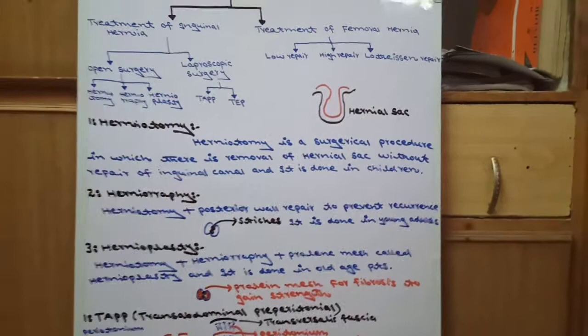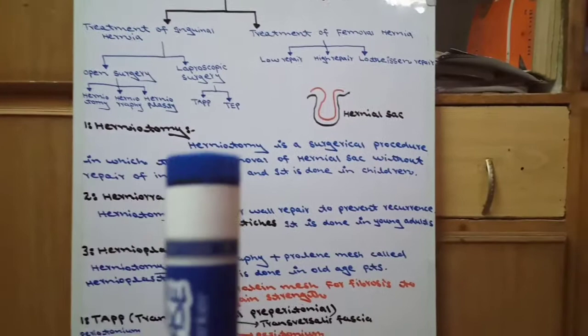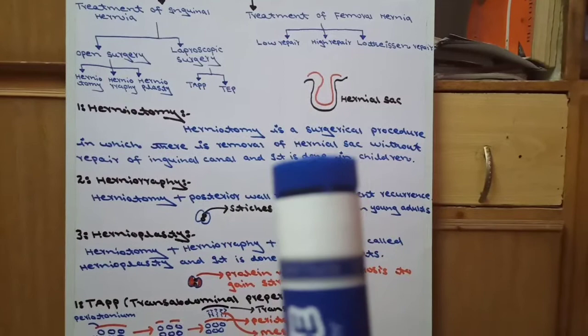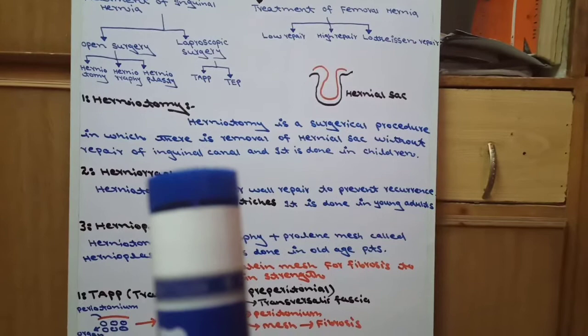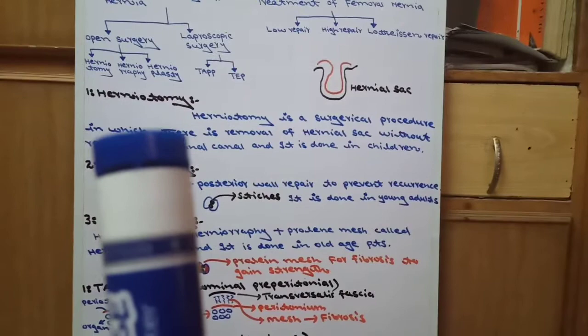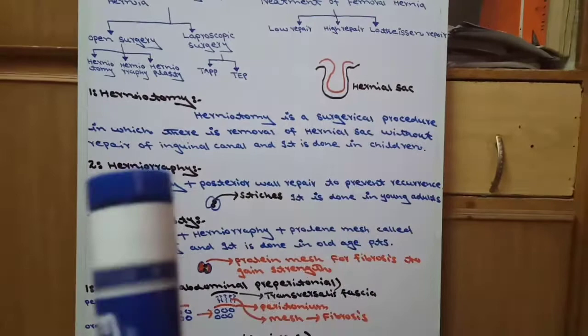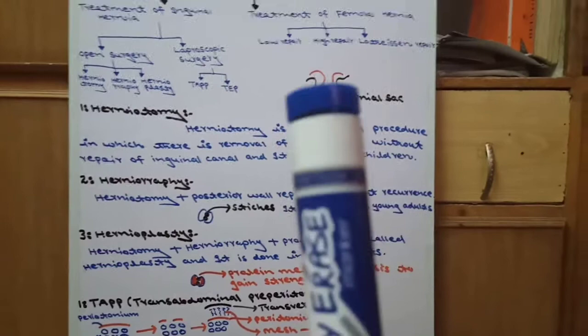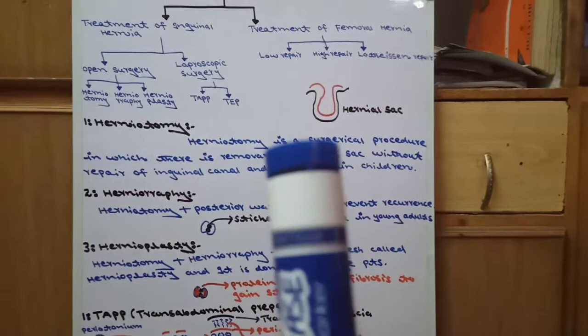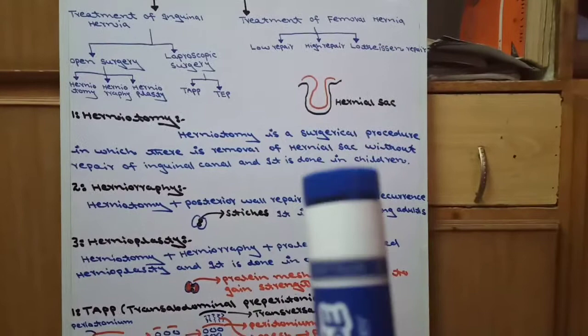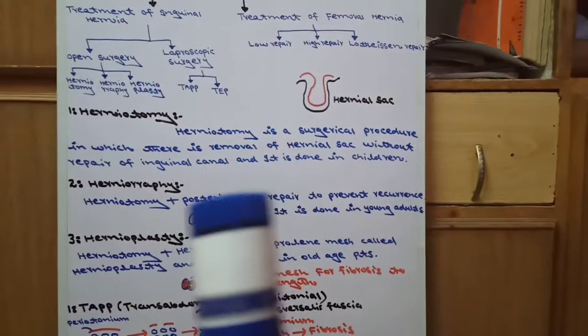First is herniotomy, which is open surgery. Herniotomy is a surgical procedure in which there is removal of hernial sac without repair of inguinal canal, and it is done in children. In herniotomy, we remove the hernial sac but the inguinal canal is not repaired. We cannot repair it. This is called herniotomy.